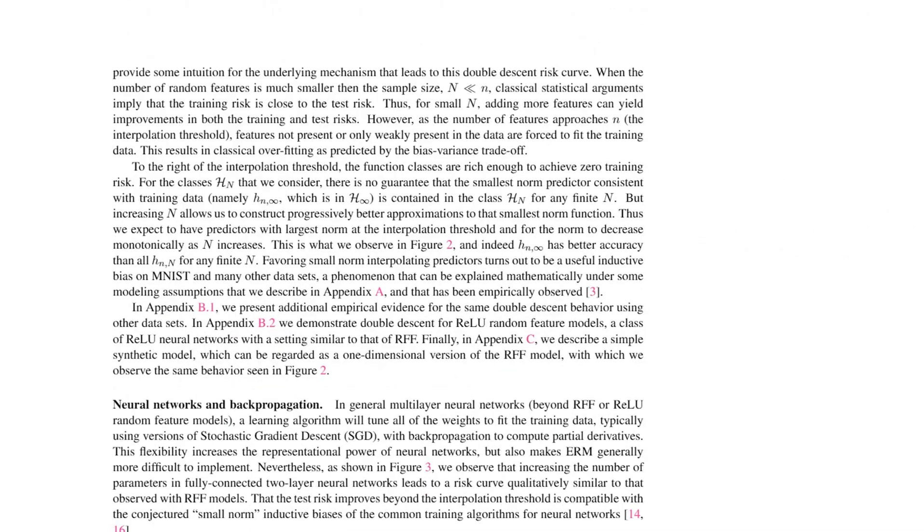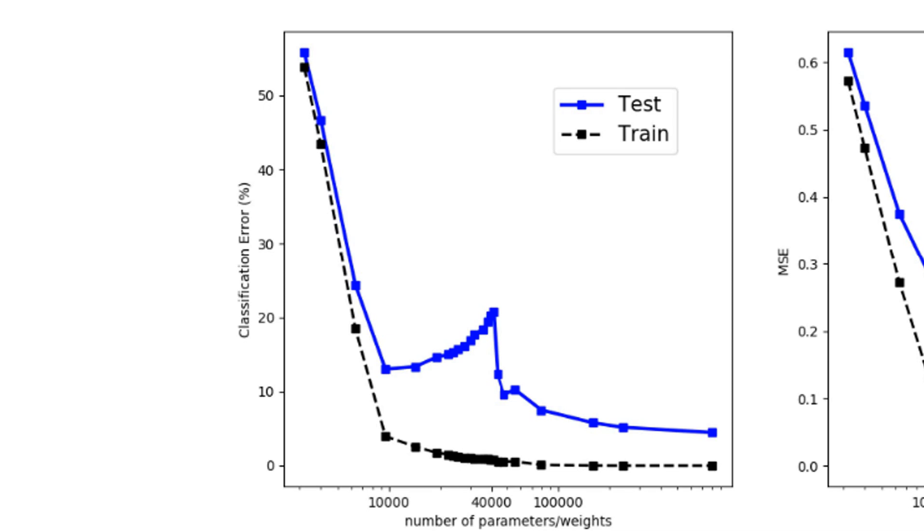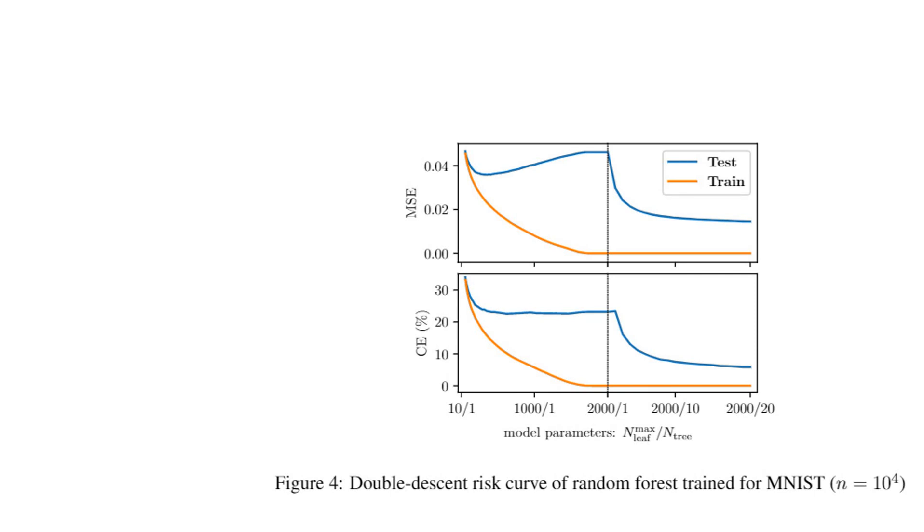All right. So that's the perspective. They go on from these random Fourier features to neural networks. And what they do here is they train a neural network on MNIST with a one hidden layer. So there's two weight layers now. And again, you can see as the number of parameters, so this means basically the number of hidden nodes, they increase the number of hidden nodes in the hidden layer. And as they increase this, the training and test error go down, training error continues to go down, test error goes up until the interpolation threshold again, and then the test error drops again, while the training error continues to be almost zero.